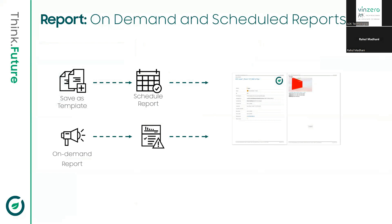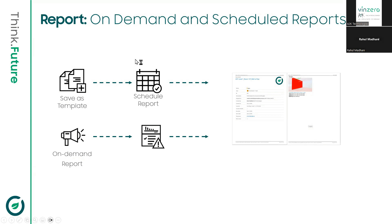There are two ways to create a report. The first is an on-demand report, where you select a template and run it. The other type is a scheduled report, where you save a template with your preferred settings and then click Schedule to set a time. For example, if you have a coordination meeting every Friday, you can schedule a report just prior to that meeting, and a report with the latest clash issues will be automatically generated each time.